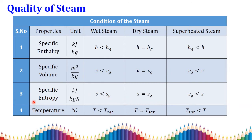For temperature, the reference is saturation temperature, at which phase changes occur. If the given temperature is less than the saturation temperature, the steam is wet. If the given temperature equals the saturation temperature, it is dry steam. If the given temperature is greater than the saturation temperature, the steam is superheated.